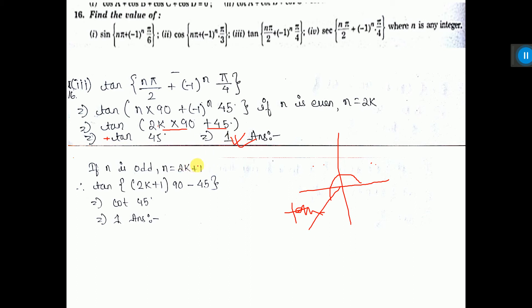Now if n is odd, that is 2k plus 1. So here, in place of n, you put 2k plus 1 into 90. And here if it is odd, then it will come minus sign. You know it, I explained it before when I did sum number 16 part 1.